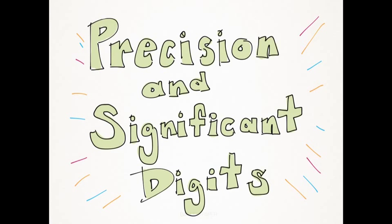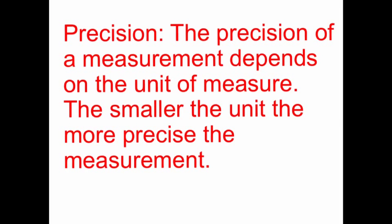This lesson is about precision and significant digits. How precise you are depends on the unit of measurement you're using. So the smaller the unit that you're using, the more precise measurement you're going to get.